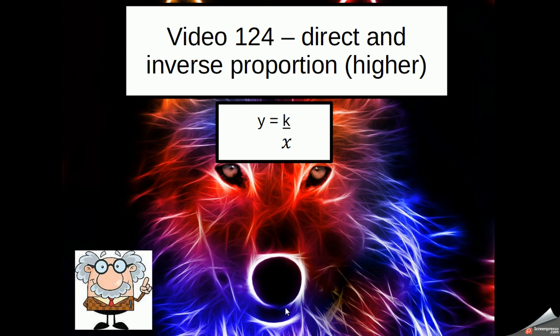Inverse proportion then is as x increases, y decreases. Now for this to happen, we have to have the x underneath instead. We divide by x on the opposite side. So we have a number over x. So for instance, y equals 2 over x would be inversely proportional.